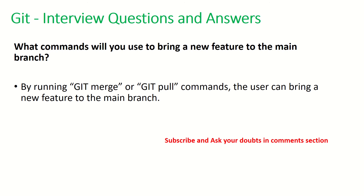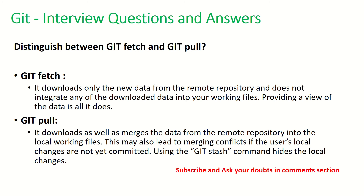What commands will you use to bring a new feature to the main branch? Whenever you want to pull something you would either do a git pull command or a git merge to bring new changes into the main branch. Distinguish between git fetch and git pull: git fetch downloads only new data from the remote repository but does not integrate any of the downloaded data into your working files. Git pull, on the other hand, brings the latest data and also merges it into your local repo's working copies.